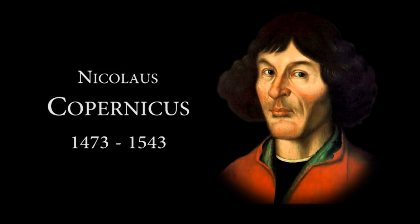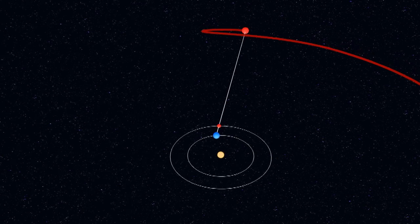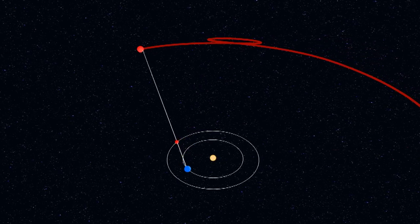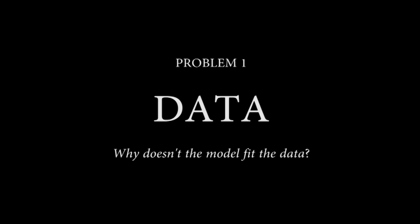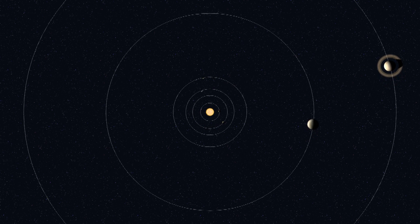Copernicus had a different explanation, which had the Earth orbiting the Sun. It was a more elegant solution, but it had several problems. Copernicus soon realized that his simple model just didn't work. It didn't match the observed positions of the planets.